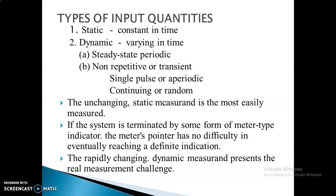Steady-state periodic means it is like a sinusoidal signal on a graph — it varies with time and consists of a periodic pattern. There is a uniform distribution of the signal from the initial point to the end point. If the signal starts increasing and then becomes constant, then it is transient. The unchanging static measurement is the most easily measurable one, but for dynamic signals, we can't easily measure.